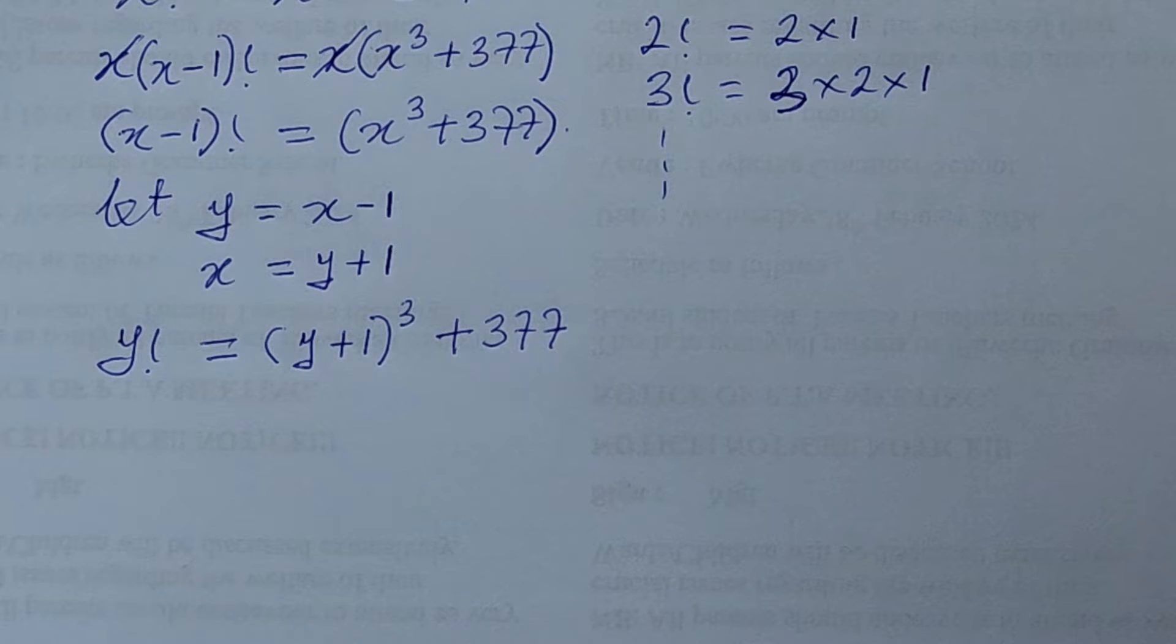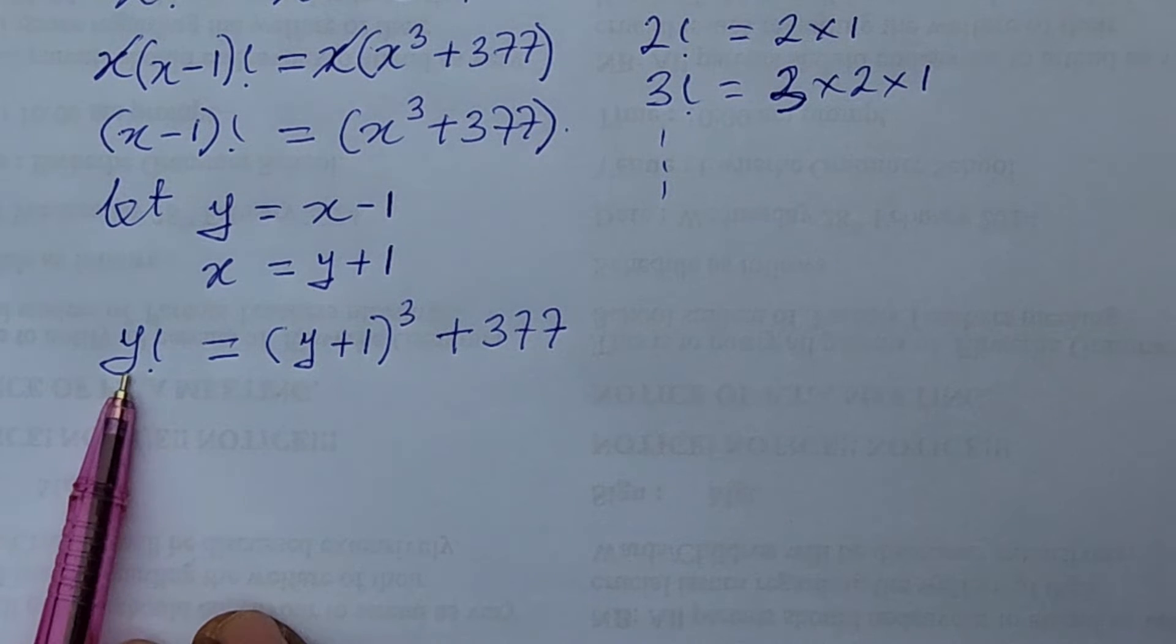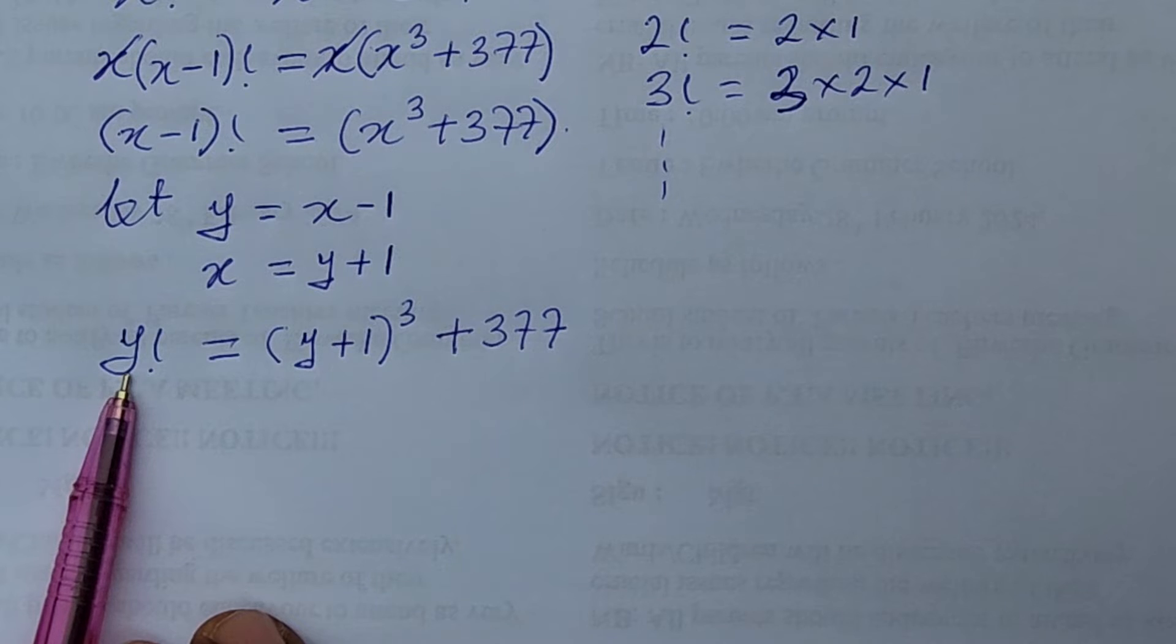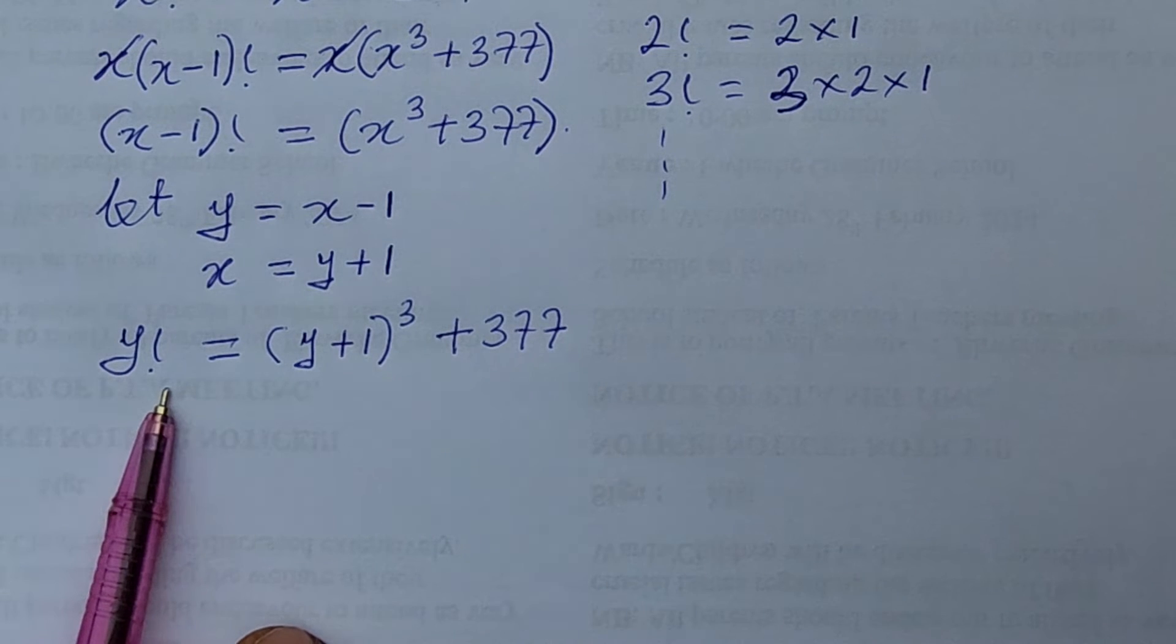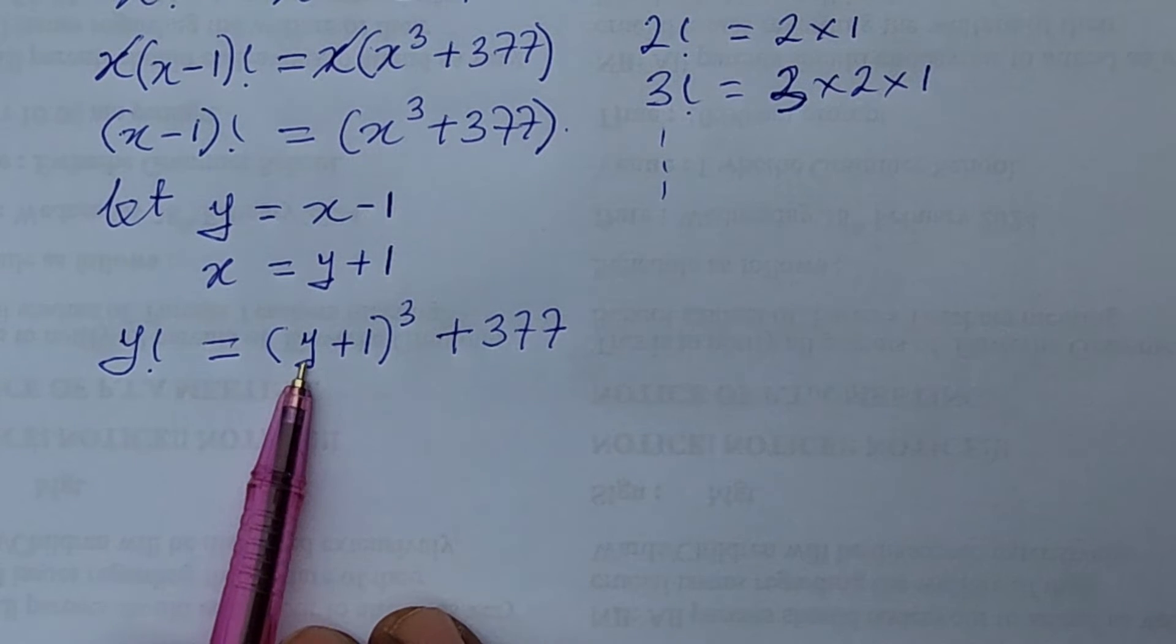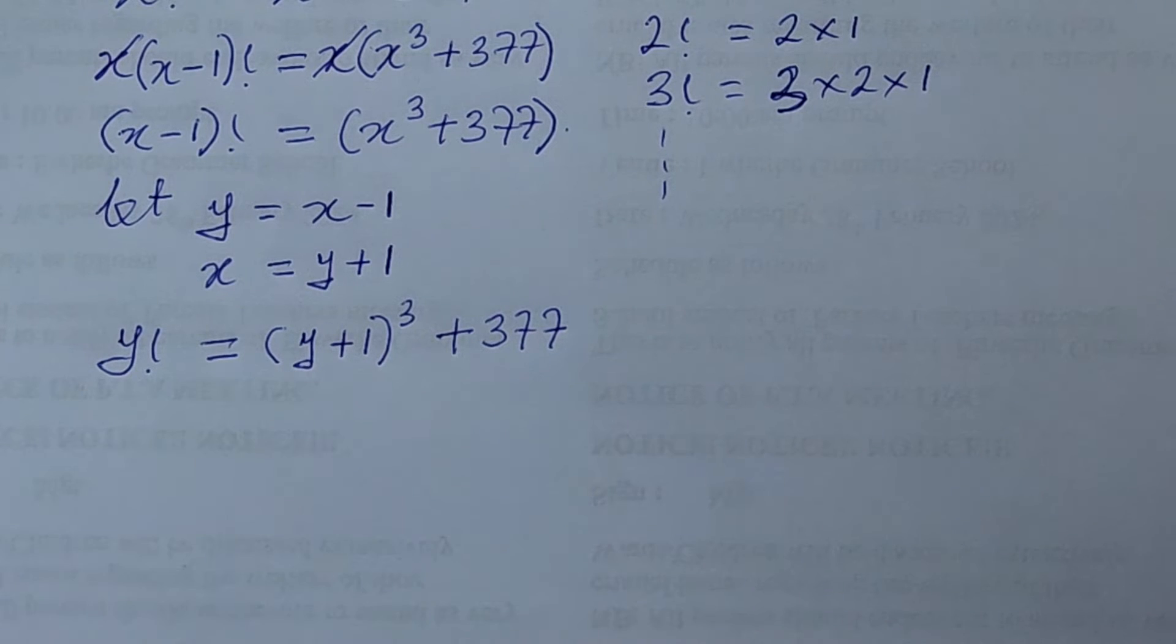We know 5 factorial is 5 times 4 times 3 times 2 times 1 which is your 120. So we try from 6 and above. So what is 6 factorial? 6 factorial if we put in 6 here that will give us 720.